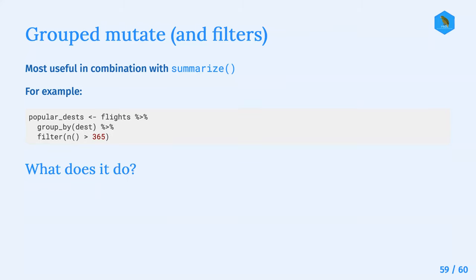One guess: destinations that are flown to more than once a day? Exactly right. You're grouping by destination and filtering by destinations that have more than 365 observations - so you could think of it as more than once a day. So they're popular destinations - that's the whole point of the exercise.